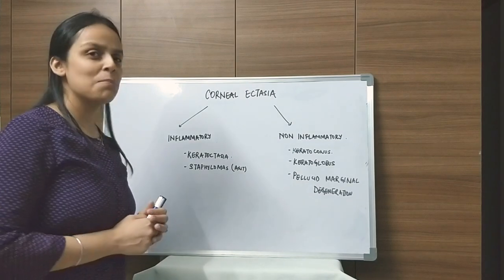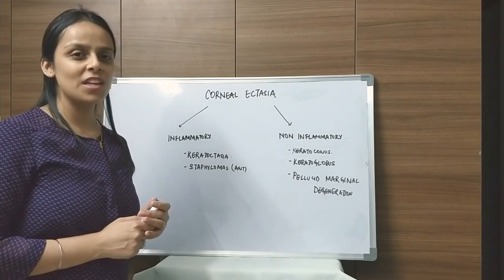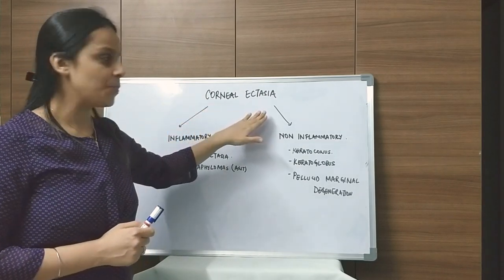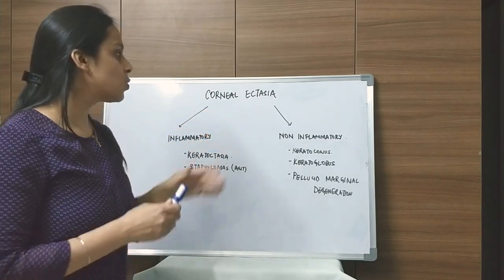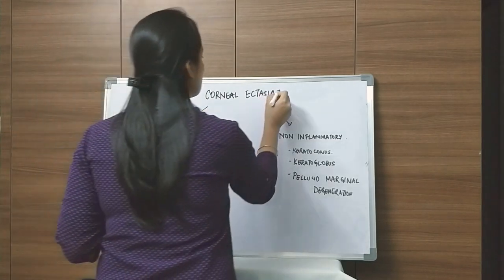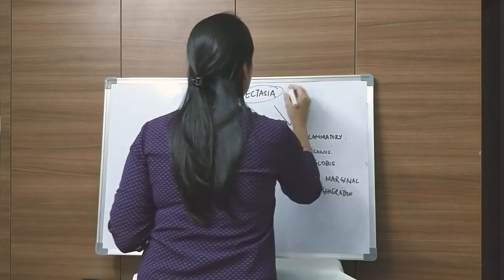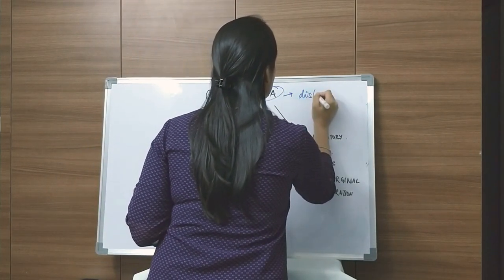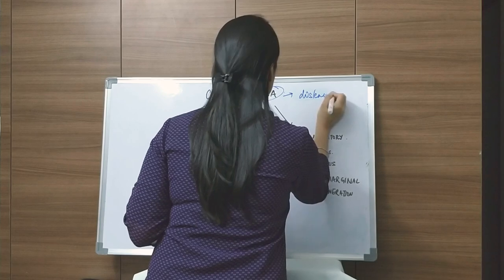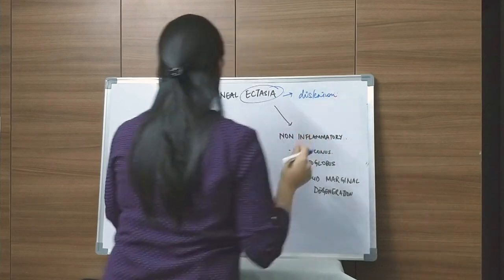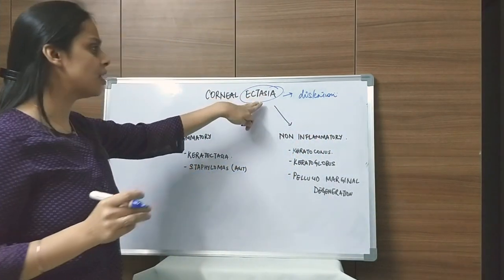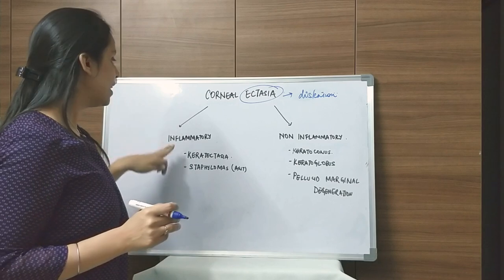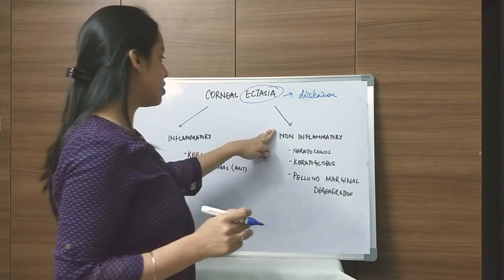Hello everyone. I am back again with today's lecture and today's topic is corneal ectasia. The term ectasia literally means distension of a hollow viscus. This ectasia of the cornea can be categorized into two parts: inflammatory and non-inflammatory.